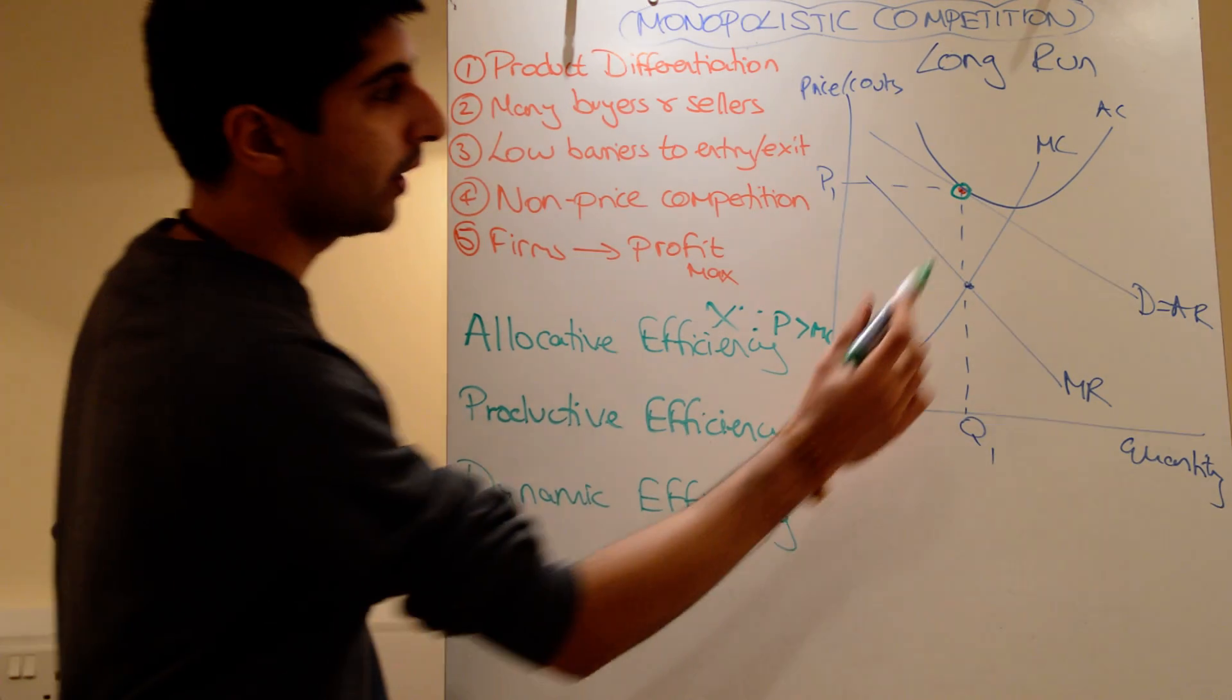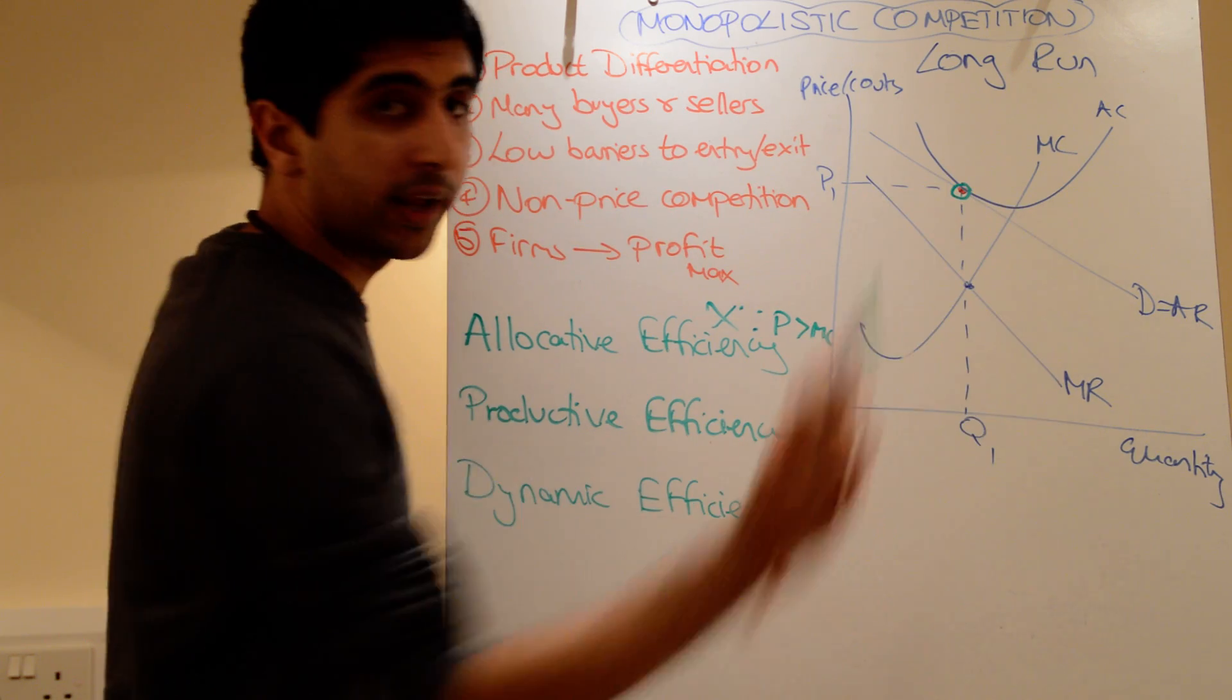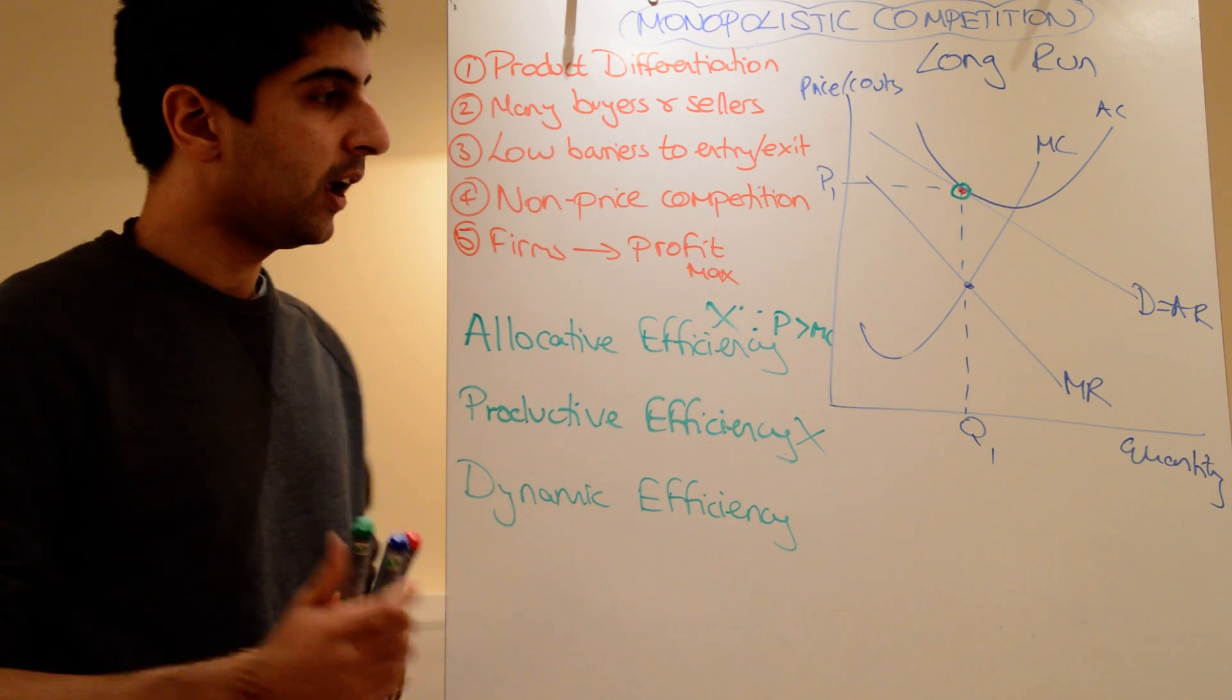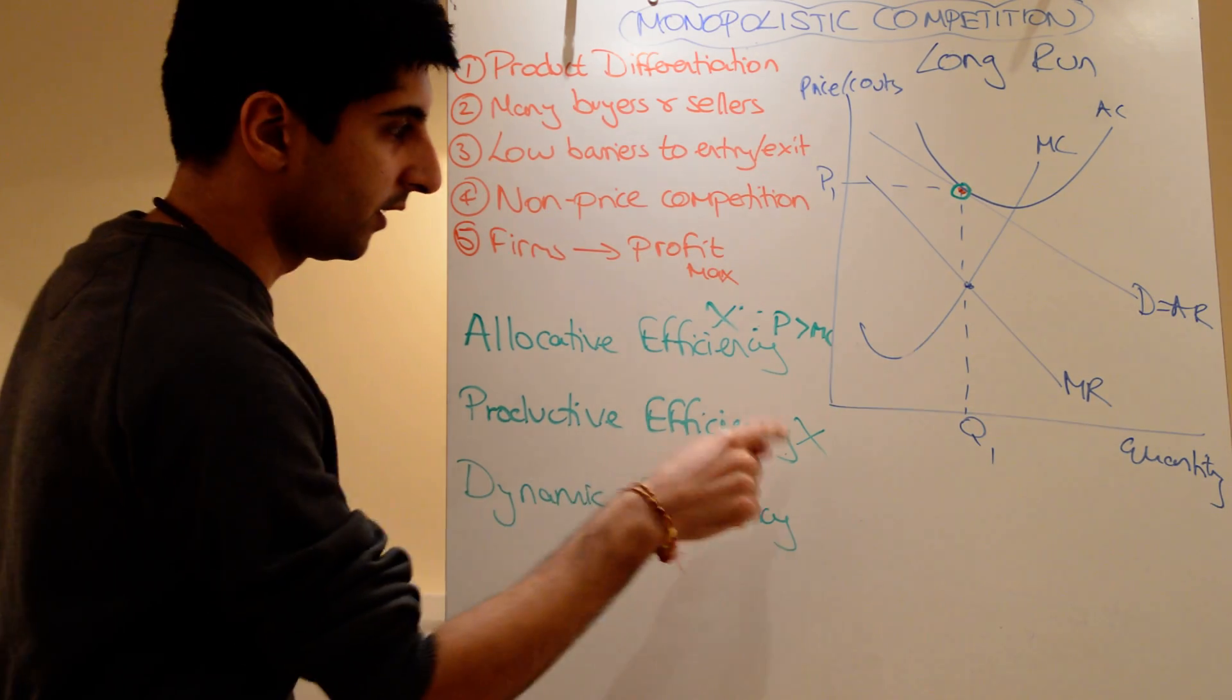Is there productive efficiency? Well, look where they're producing. They're producing at that point there, when actually the lowest point is way down there. So again, they're not operating at the minimum point of the average cost curve. They're not exploiting all economies of scale. No productive efficiency at all.